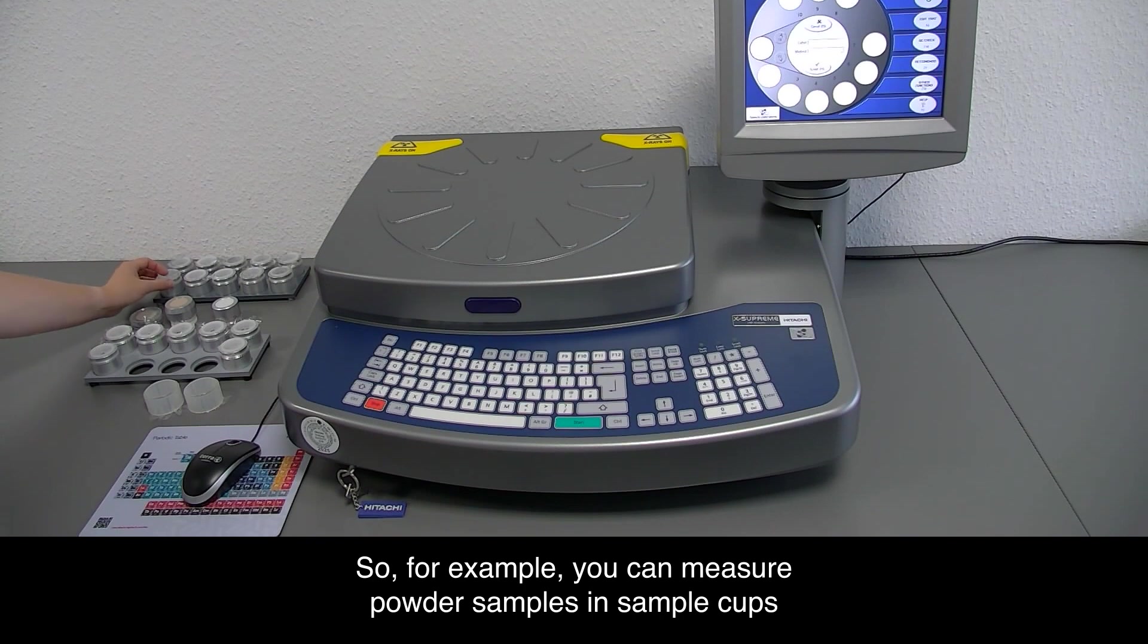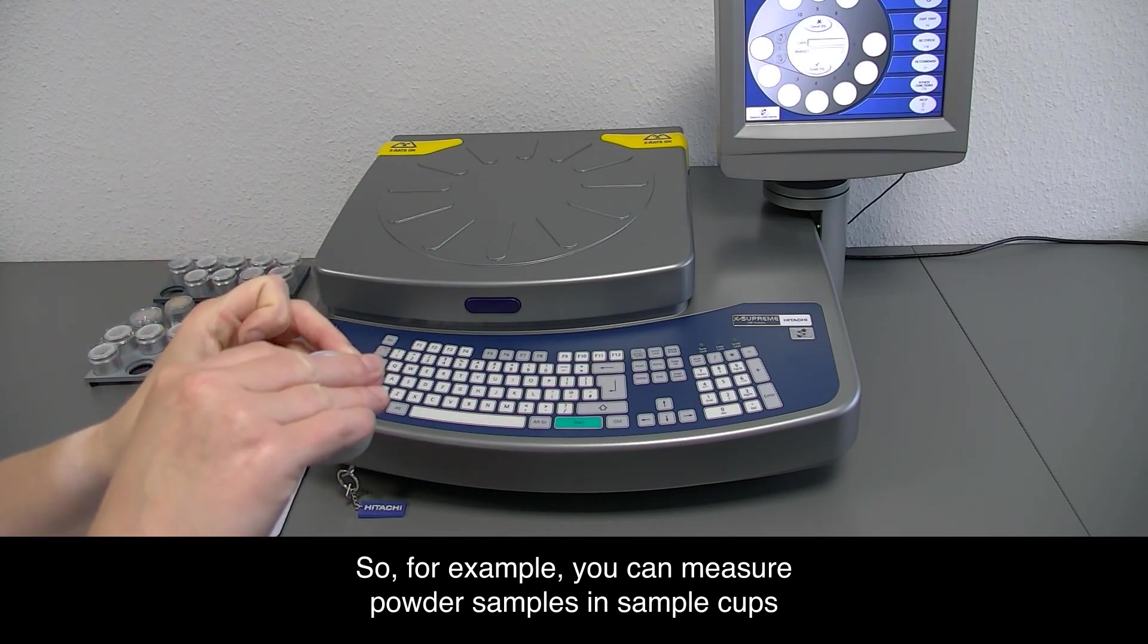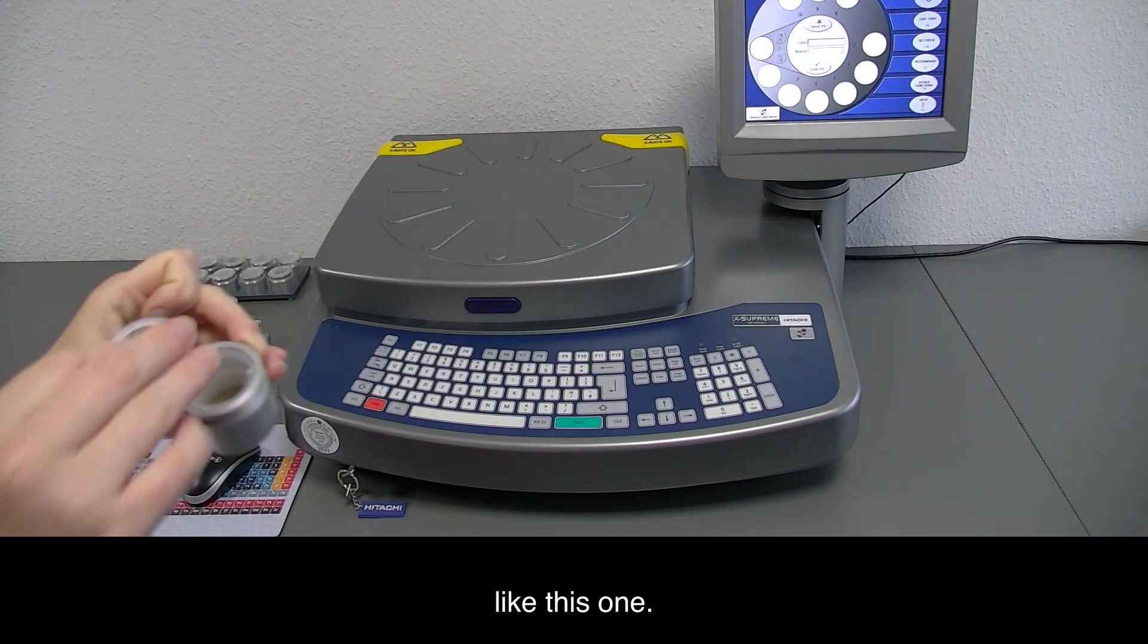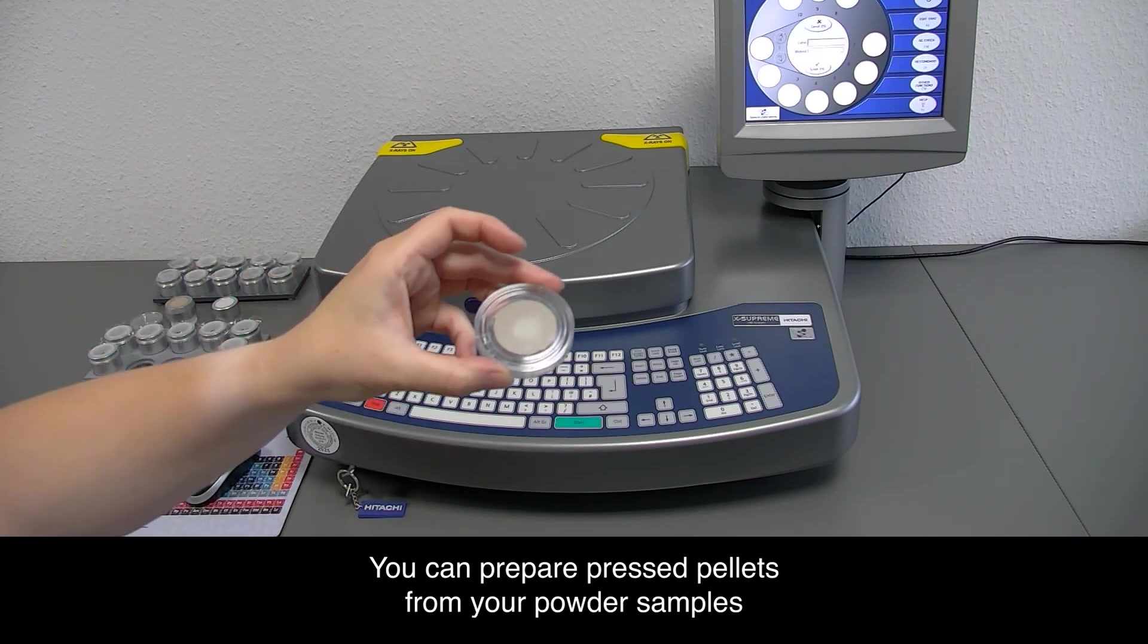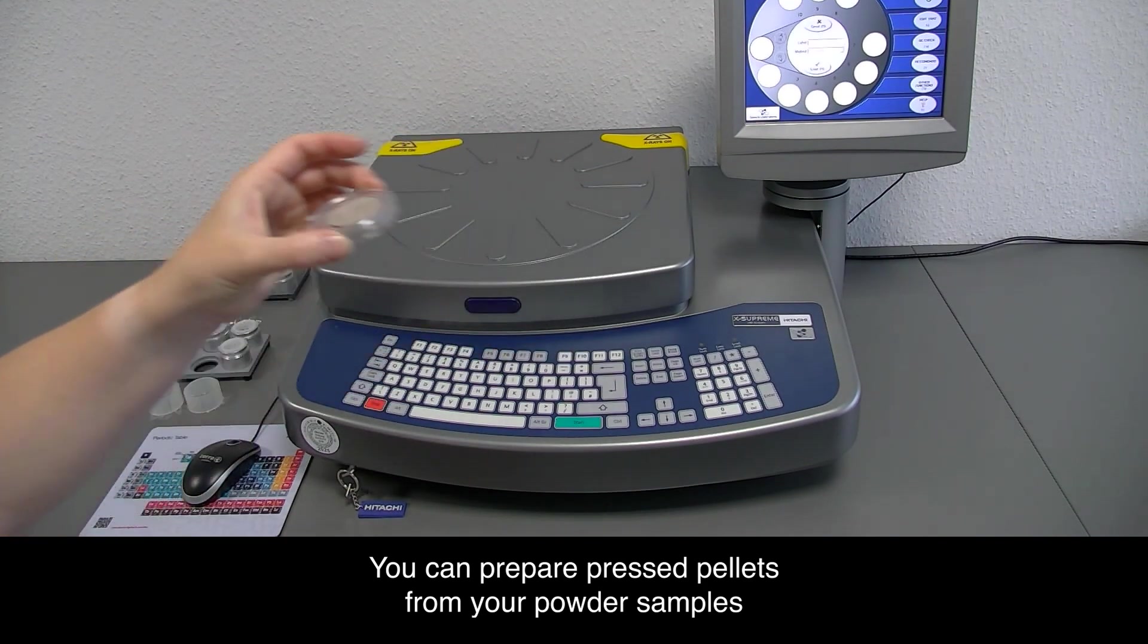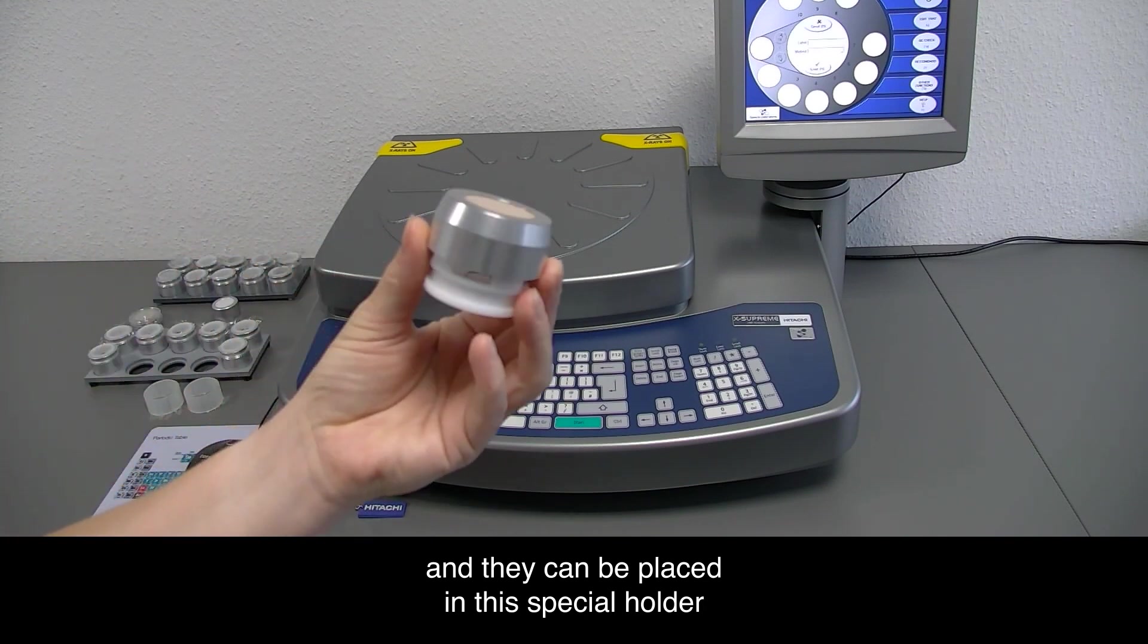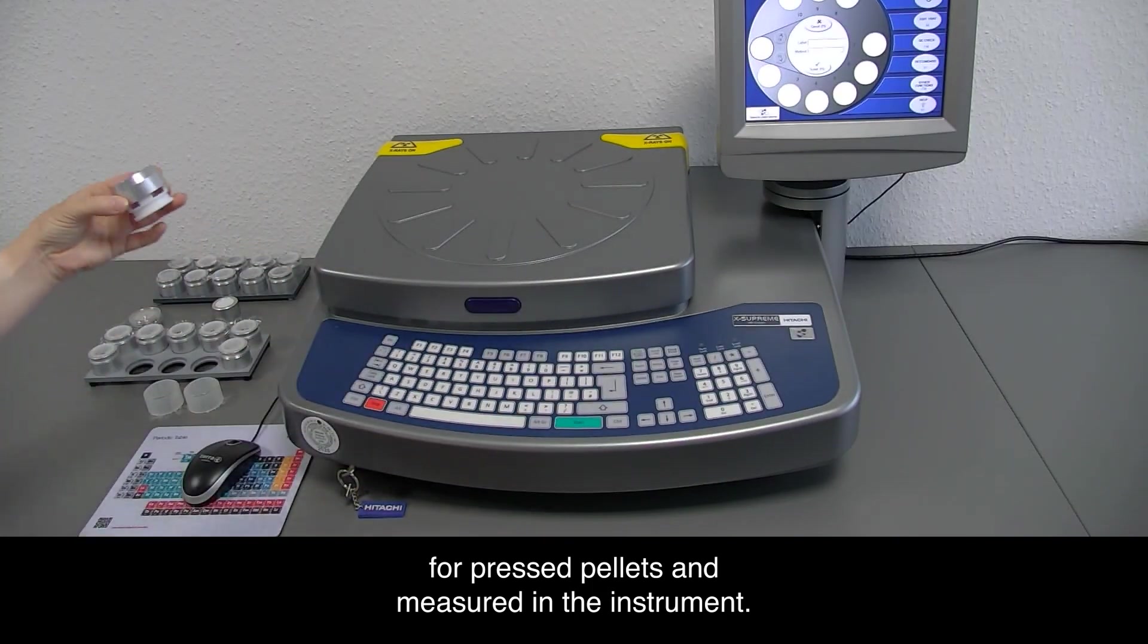For example, you can measure powder samples in sample cups like this one. You can prepare pressed pellets from your powder samples, and they can be placed in this special holder for pressed pellets and measured in the instrument.